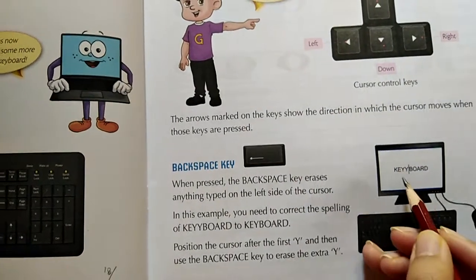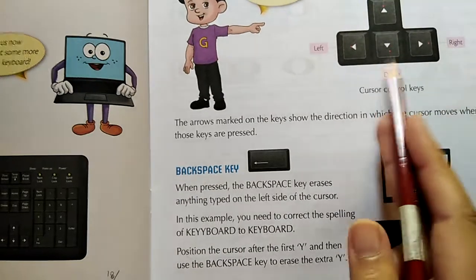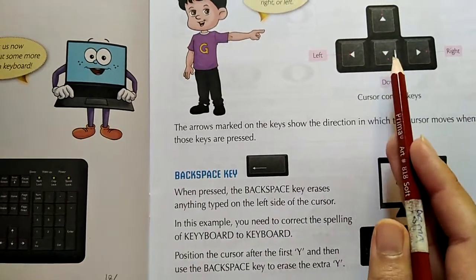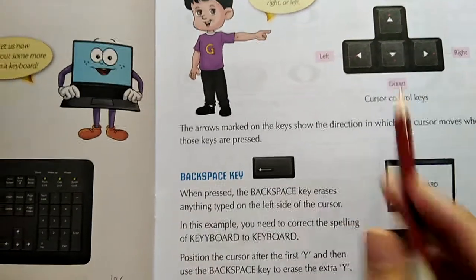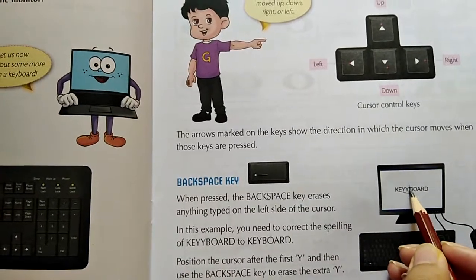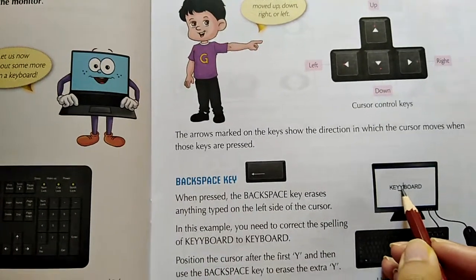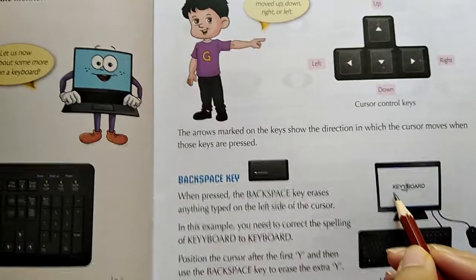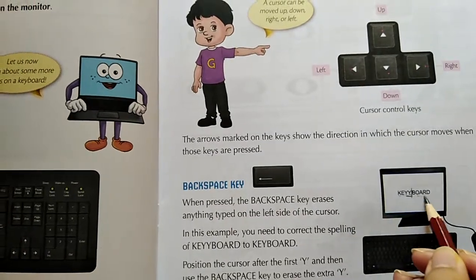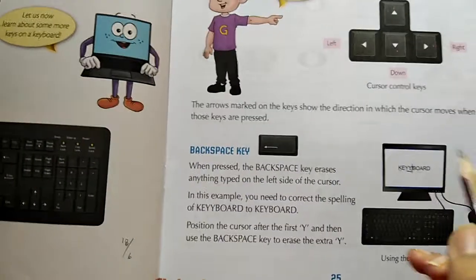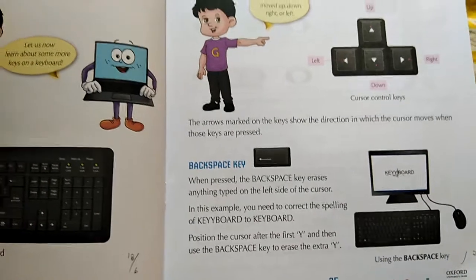Just move using the cursor keys — the arrow keys — to go there and press backspace. It will be erased, and it will be written correctly as 'KEY' then 'BOARD'. So the backspace key is used to erase extra characters when you have typing errors.